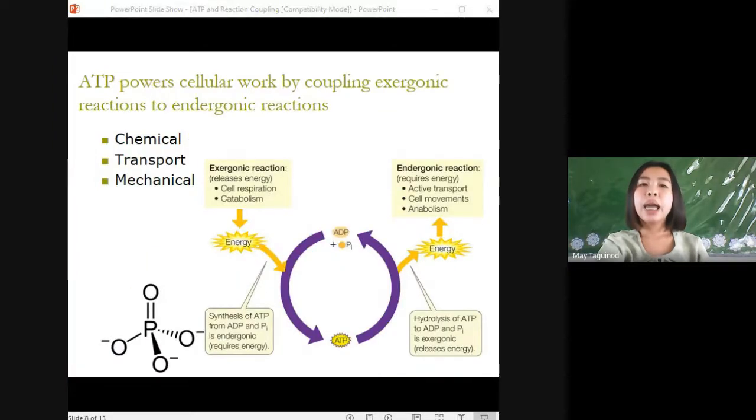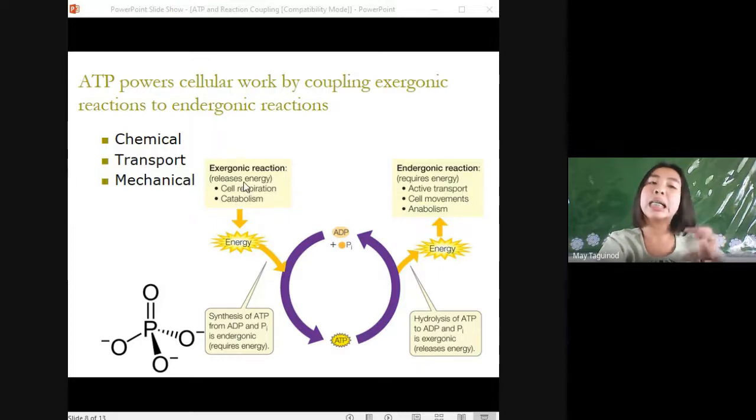ATP powers cellular work by coupling exergonic reactions to endergonic reactions. So what are the differences between the two? Exergonic reactions release energy and it happens during cell respiration and catabolism. While endergonic reaction requires energy and it happens mostly during active transport, cell movements, and anabolism.